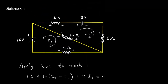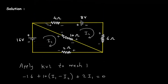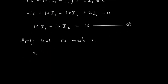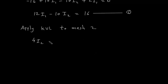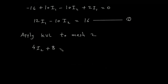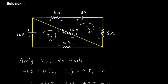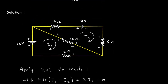Now we will apply KVL to mesh number 2. KVL stands for Kirchhoff's Voltage Law. Starting from here: plus 4I2, plus 8, plus 6I2, plus 10(I2 - I1) is equal to 0.